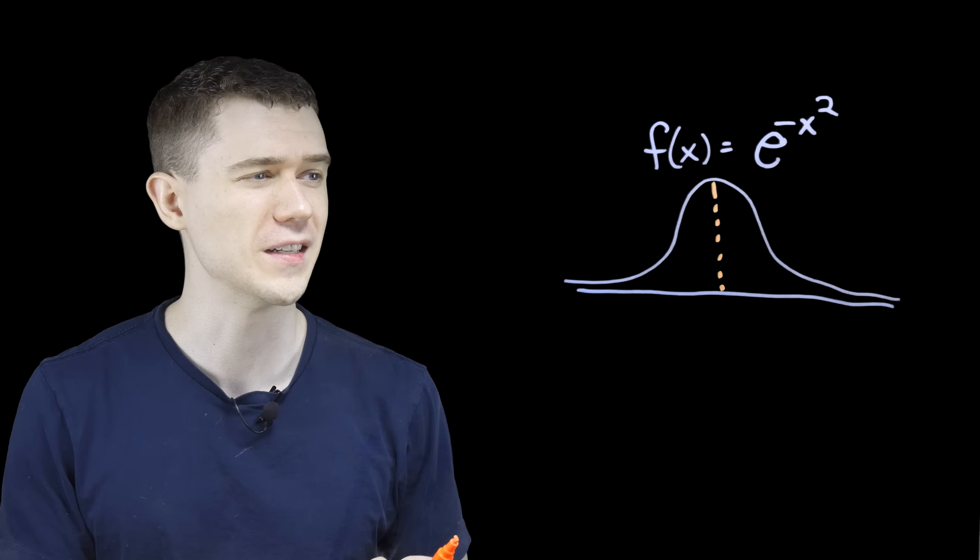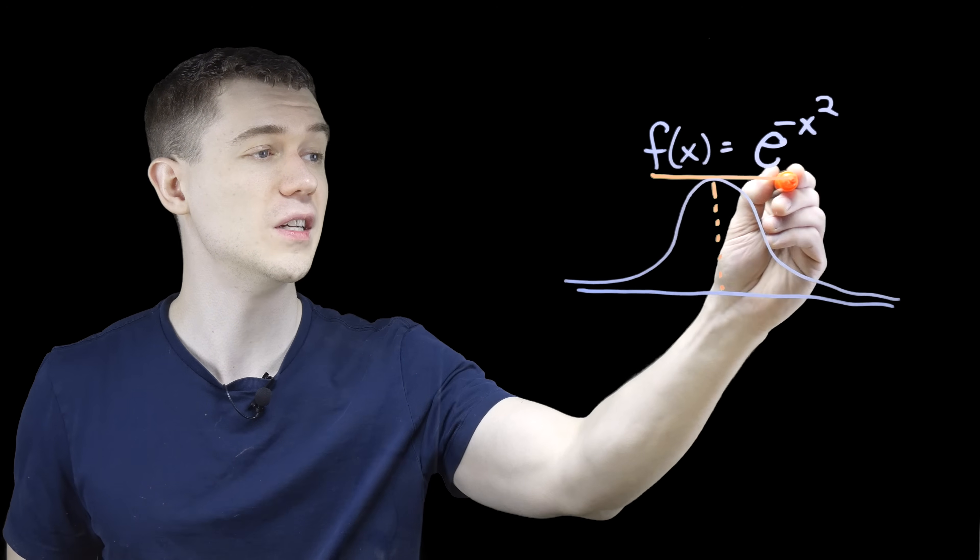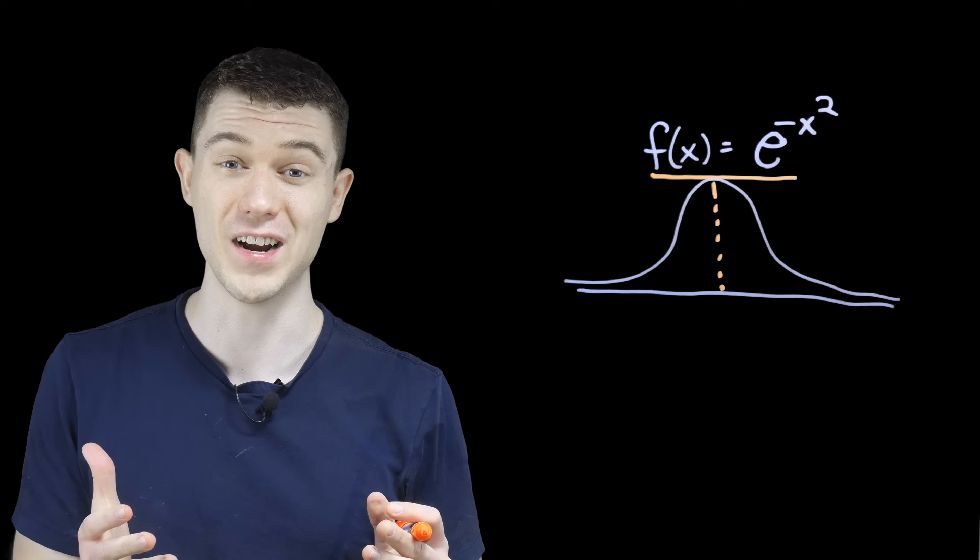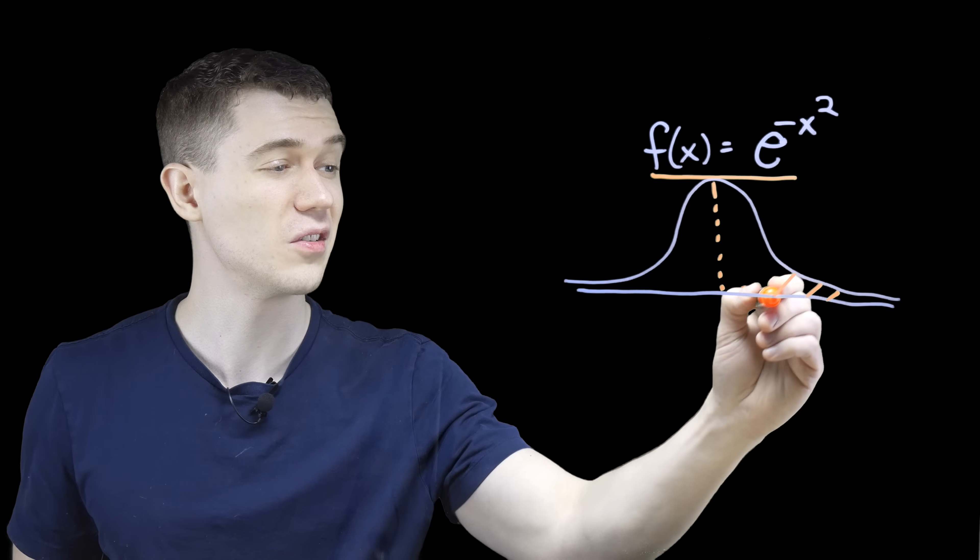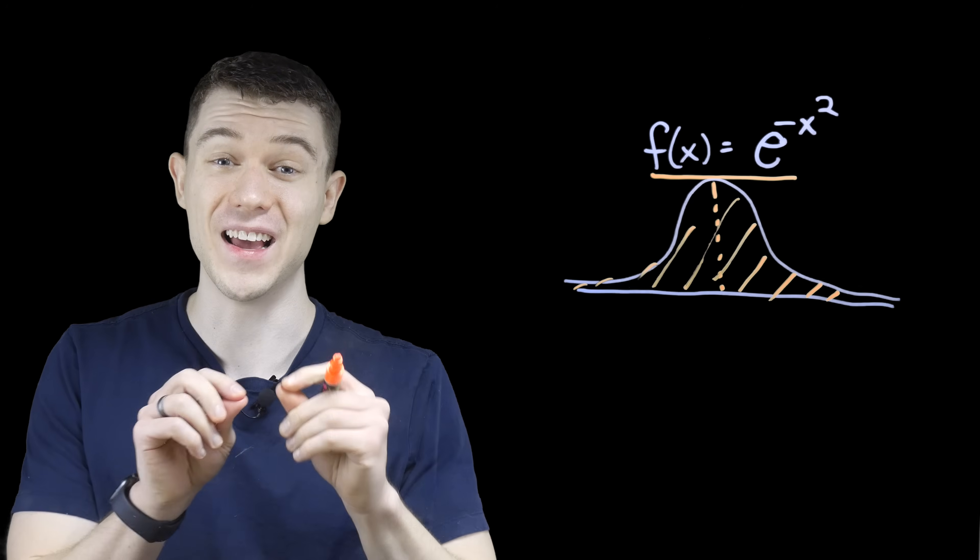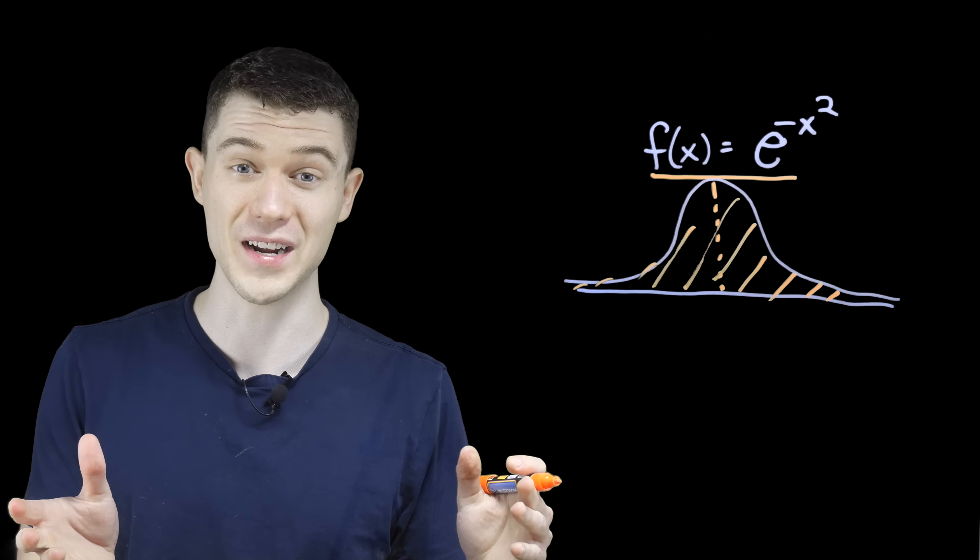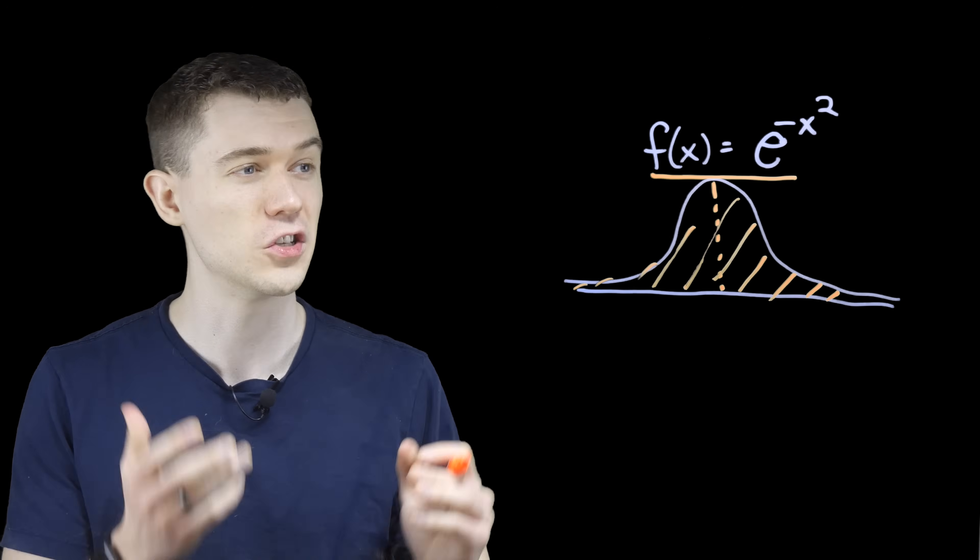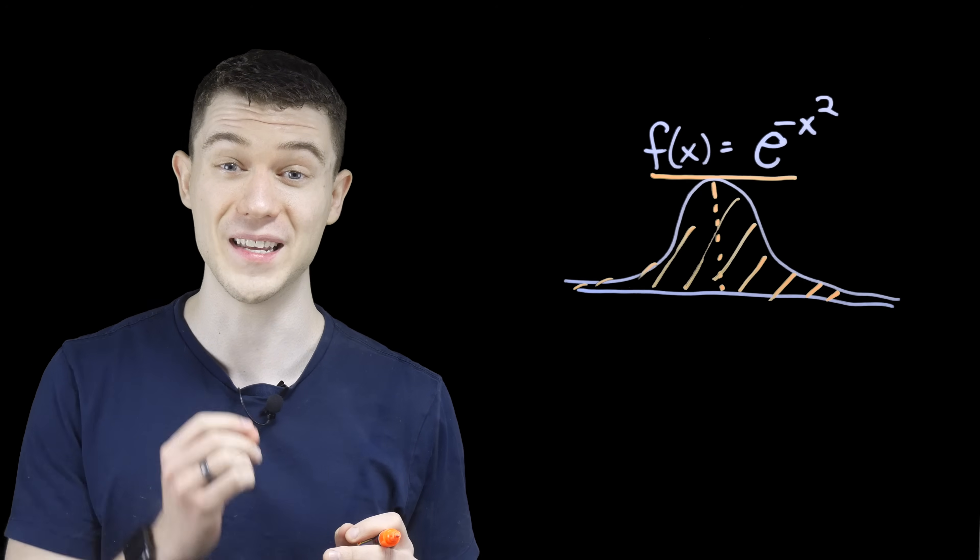We have to account for some normalizing constants, but really this shape comes from this function, e to the minus x squared. And if we want the area under this curve, we're going to have to do some integration. And this function stretches forever to the left and to the right. It has an infinite domain, so we want to integrate this thing over its entire domain to find the area.